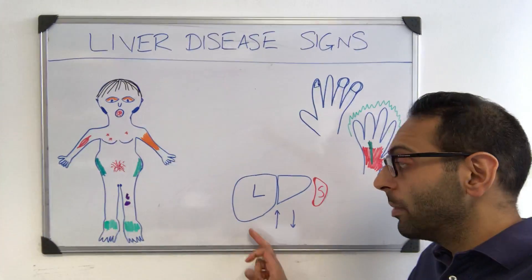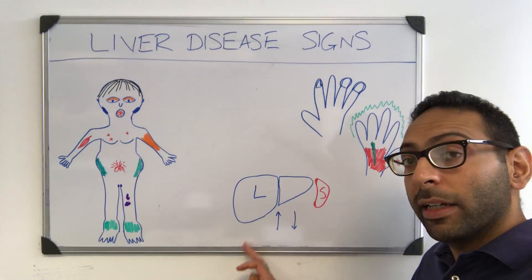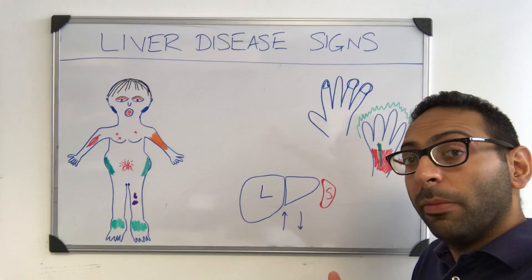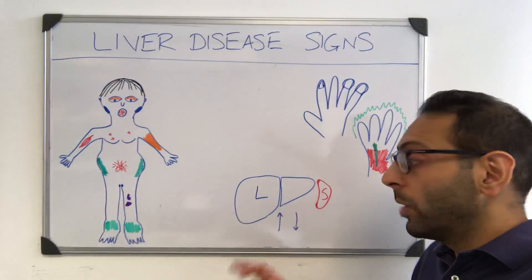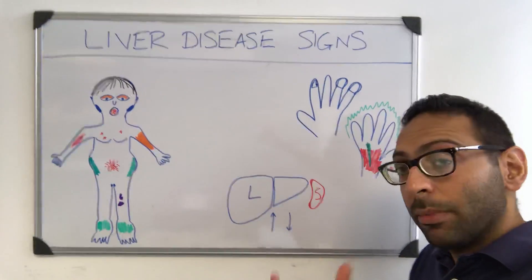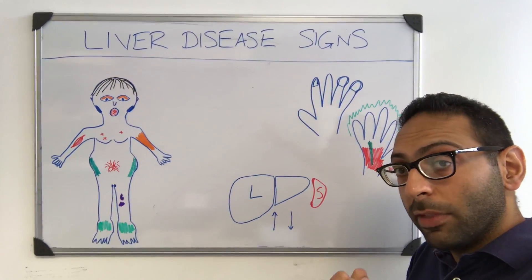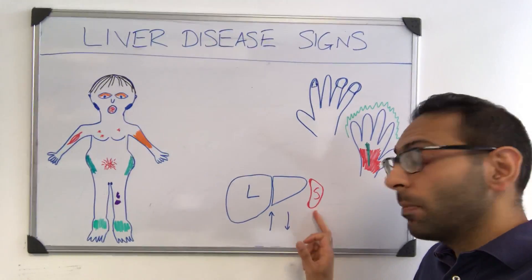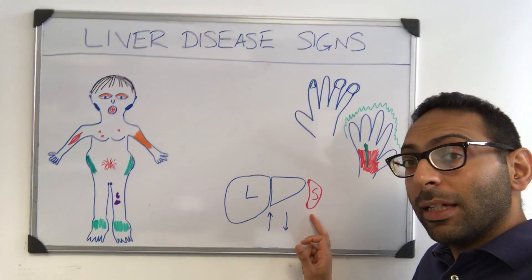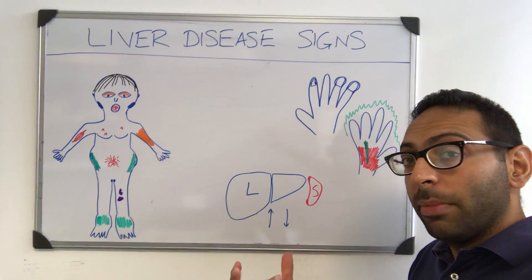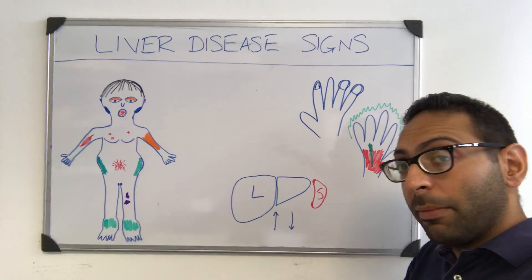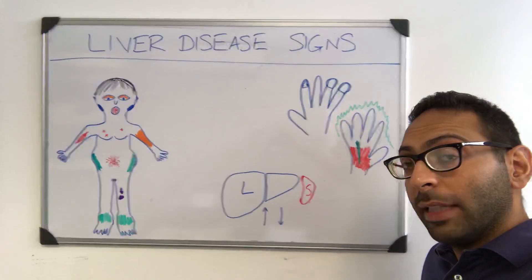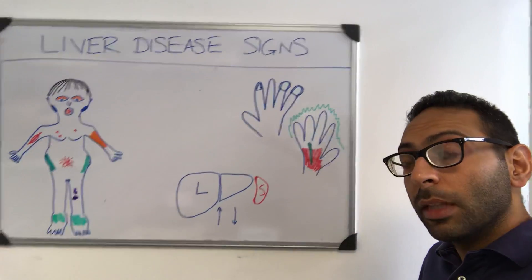Starting with the abdomen itself: the liver can either go large — hepatomegaly — or go small, for example in a cirrhotic liver. You can also get splenomegaly due to portal hypertension, giving this hepatosplenomegaly picture in the abdomen.